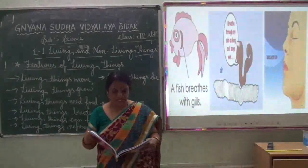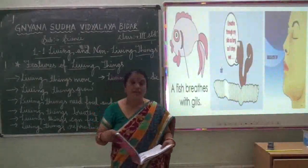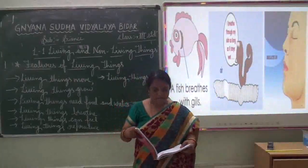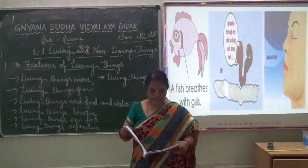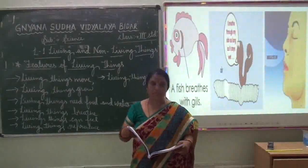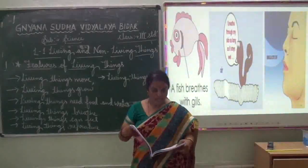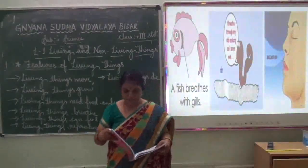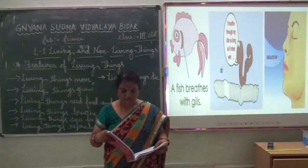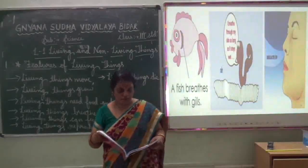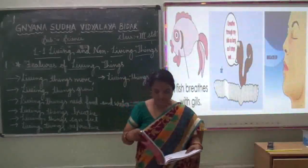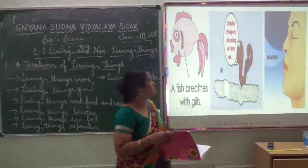We breathe in air containing oxygen. Birds and animals also breathe through their lungs. Insects breathe through the air holes on the surface of their body. Fish takes in oxygen from the water through gills.